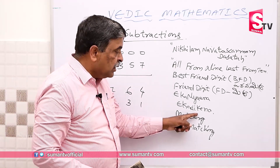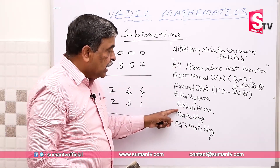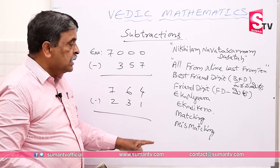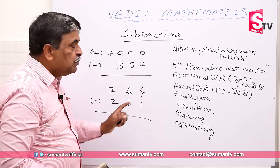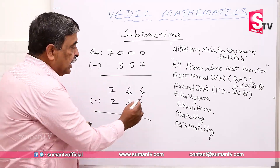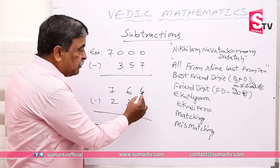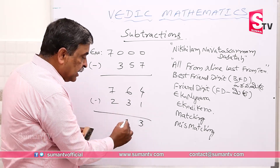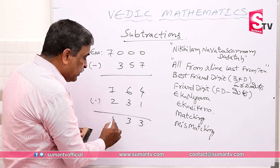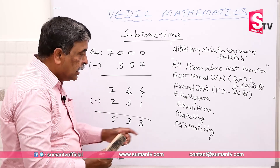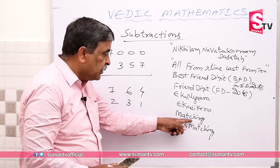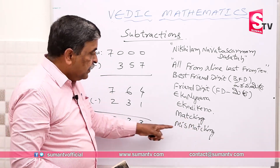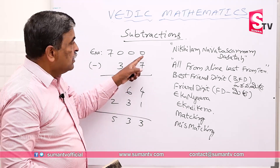This is the matching case, so we can apply this formula. Simply, we can do normal subtraction: 4 minus 1, 6 minus 3, 7 minus 2. Each top digit is bigger than the bottom digit. The final digit comparison: 5 is smaller than 6, so 6 is bigger than 1.